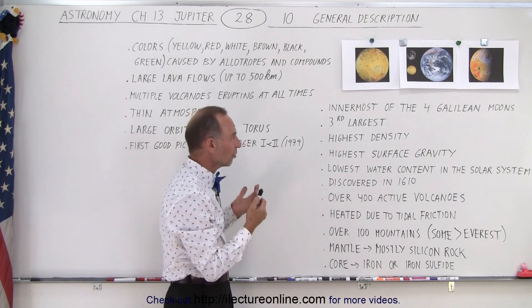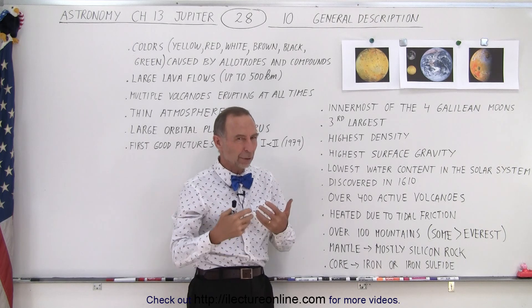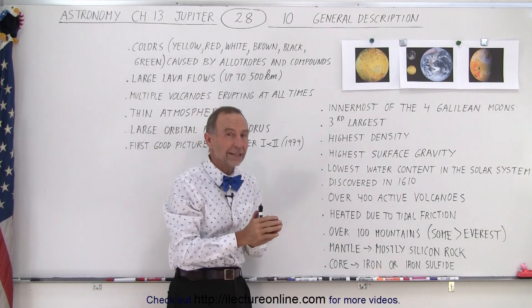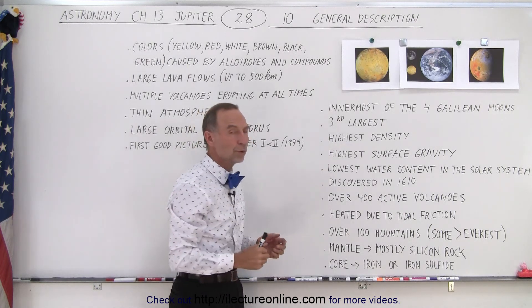But in general, you can say that Io is the innermost of the four Galilean moons. It's only a little bit over 400,000 kilometers away, which is slightly farther away than our moon is away from the earth.